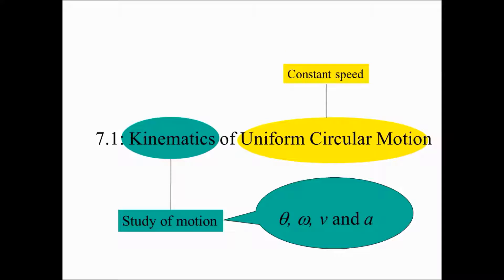Uniform circular motion means object going round in a circle at a constant speed.